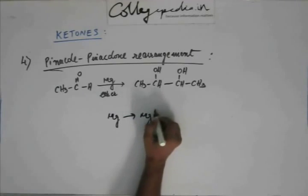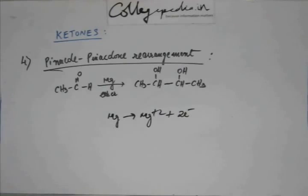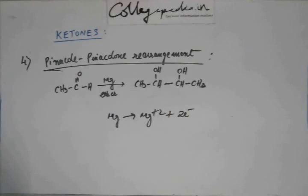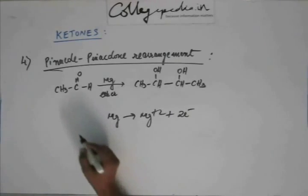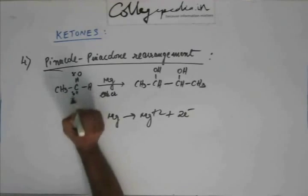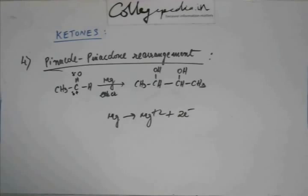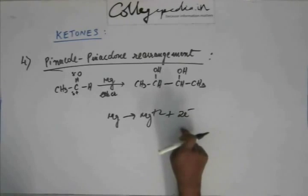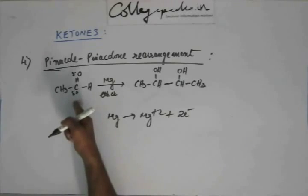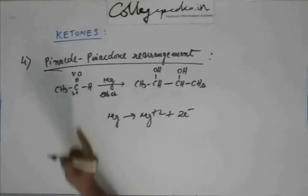Magnesium loses electrons — it forms a divalent ion and two electrons are released. These electrons have to go somewhere. Magnesium, being an active metal, loses electrons and they must be gained by someone — either a bonding or antibonding orbital. Since there is no empty bonding orbital (no positive charge in the system), the electrons must go into an antibonding orbital. The carbonyl carbon, which has a delta-positive charge due to the electronegative oxygen, is the candidate to accept this electron.